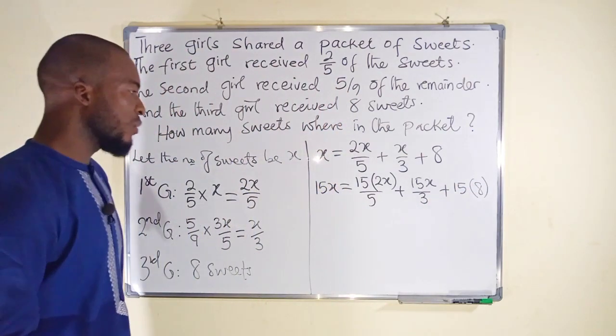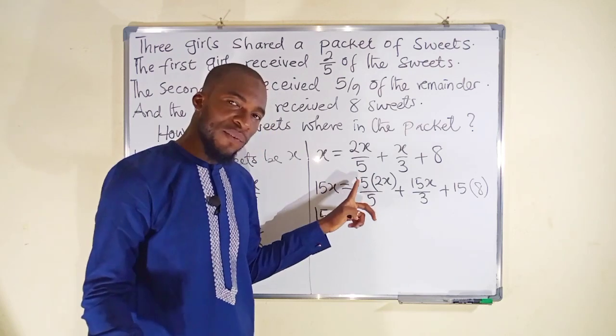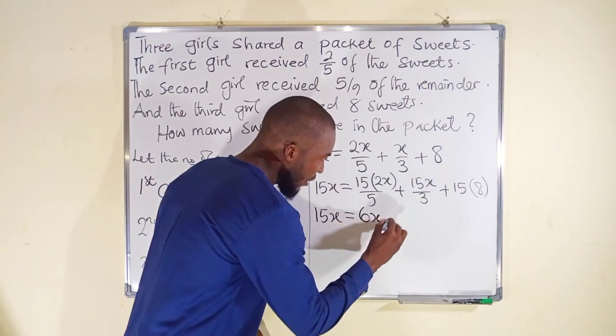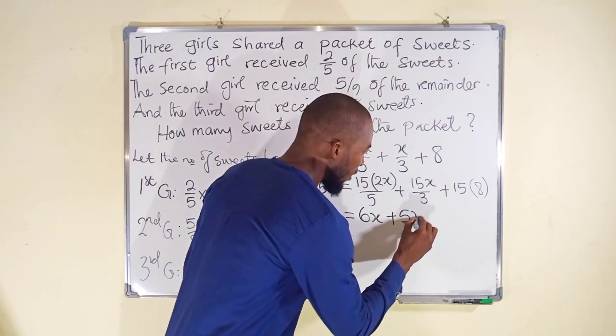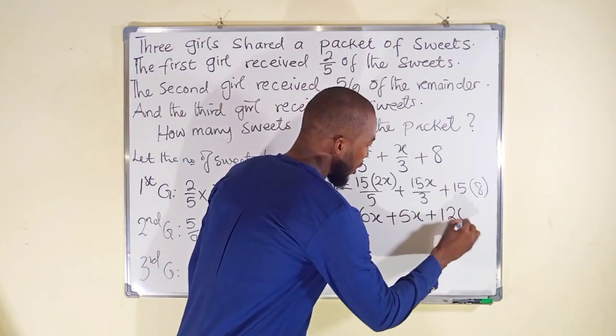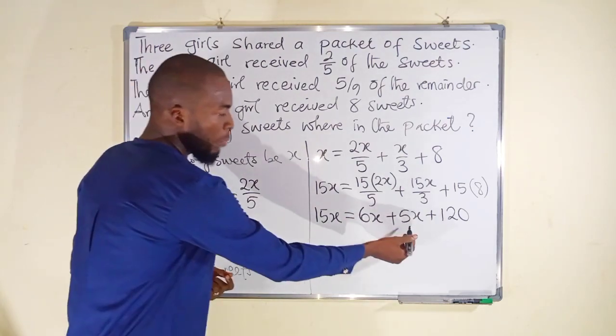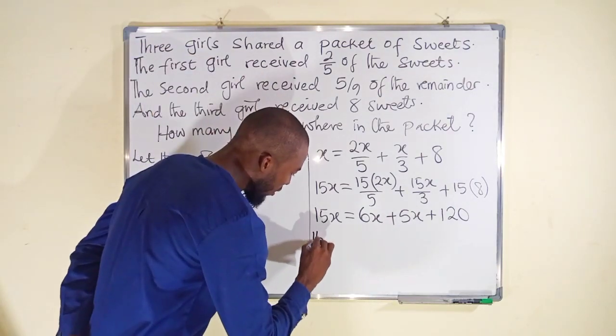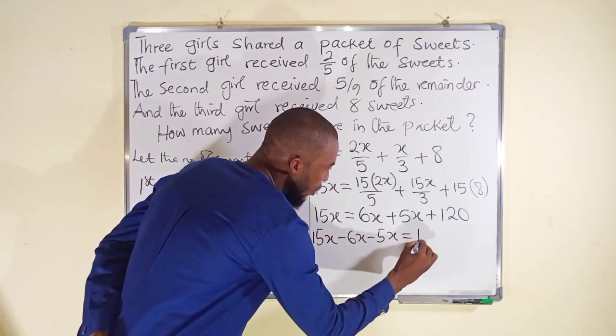Let us further simplify. This is 15x. 5 can go into 15 three times. Use that 3 to expand the bracket. 3 times 2x is 6x. 3 can go into 15 five times, so we have 5x. Plus 15 times 8 is 120. Let us collect the like terms. All those with x should come to the left. Once they cross over the equality sign they become negative. So we have 15x minus 6x minus 5x, and to the right we have 120.